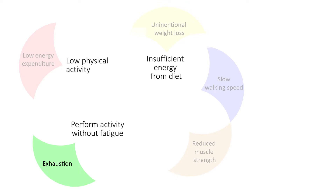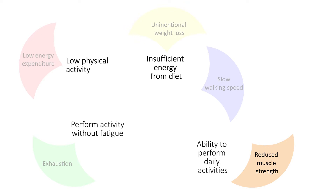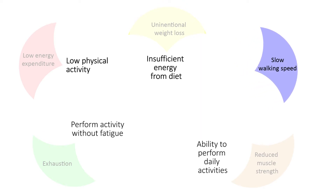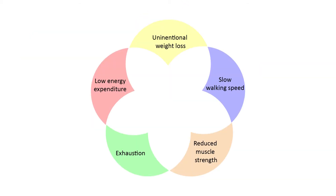Reduced muscle strength is related to the ability to perform daily activities, such as opening a lid or carrying the groceries, and a low grip strength can reflect possible difficulties with those activities. Finally, a lower walking speed is another aspect of this frailty phenotype model. Each component has been suggested to reflect part of the aging process, as well as be related to daily functioning.